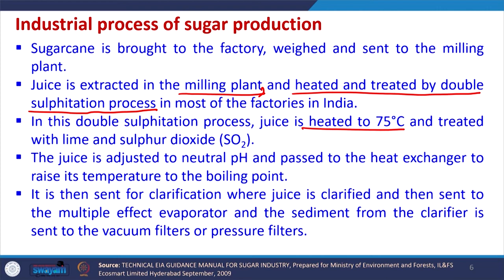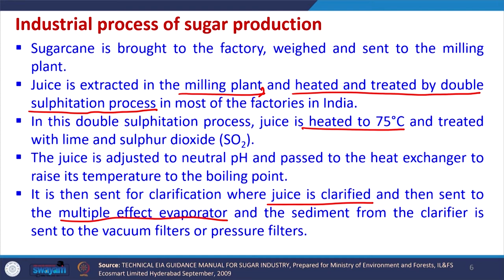After heating, the juice is sent for clarification where it is clarified and then sent to a multiple effect evaporator. The sediments from the clarifier are sent to vacuum filters or pressure filters. The concentrated syrup obtained from the evaporator is again bleached by passing sulphur dioxide through it, and the pH of the syrup drops to about 5.4. It is then sent to a vacuum pan where the thickened syrup is boiled 3 to 4 times as per the purity in order to extract the sucrose content in the form of crystals.